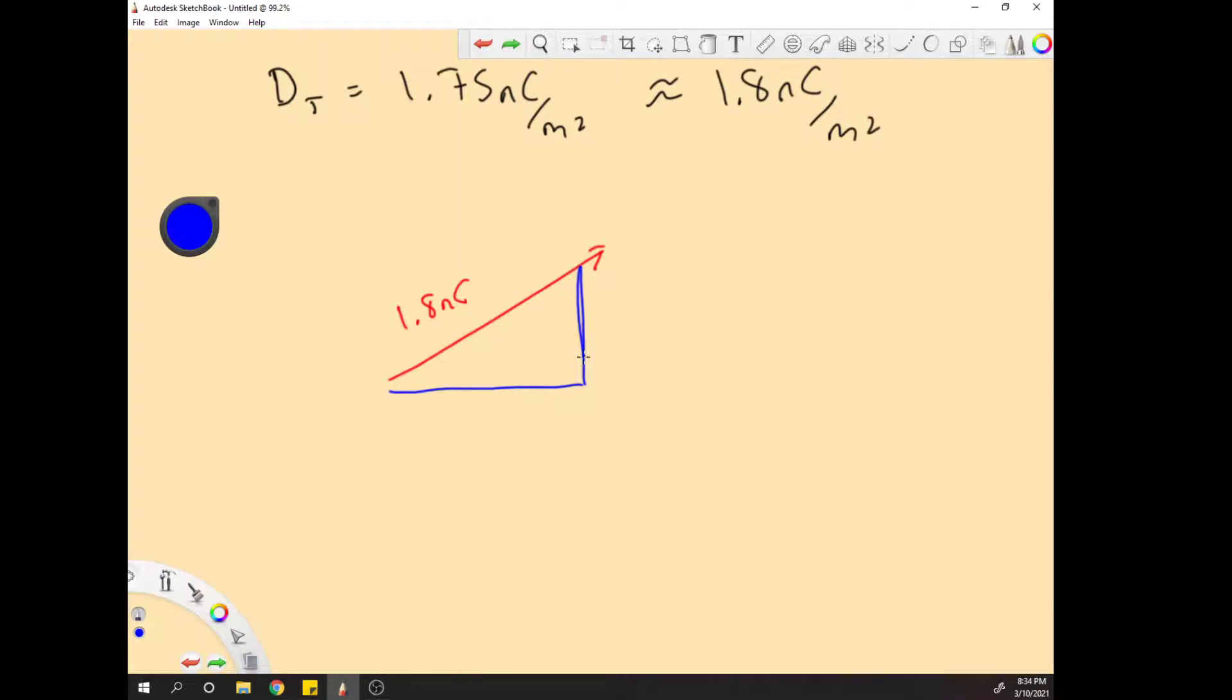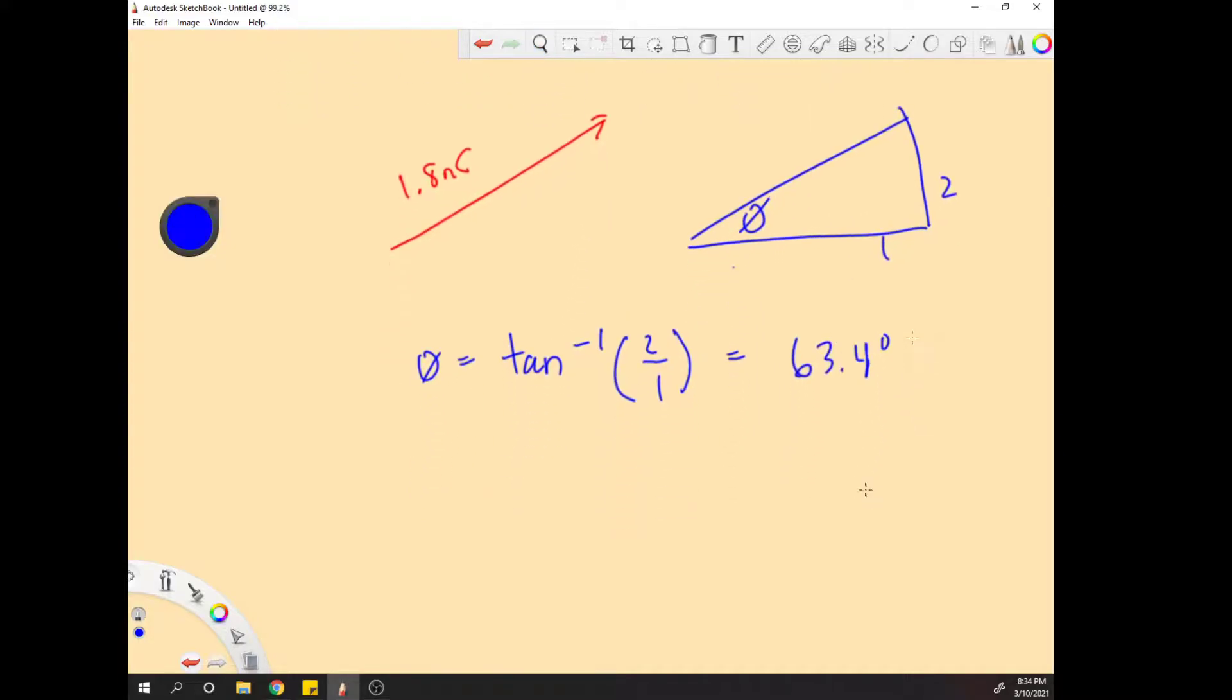Now we need to find out what the horizontal and vertical components are. We got to find out what angle this is. That's 63.4 degrees. And now we apply this angle to the vector here. So now D is going to be equal to 1.8 cosine of this angle plus 1.8...